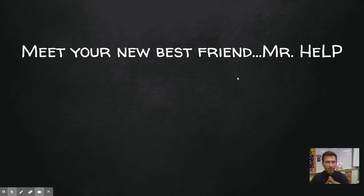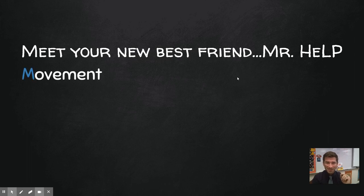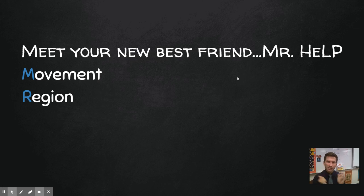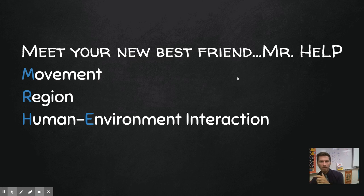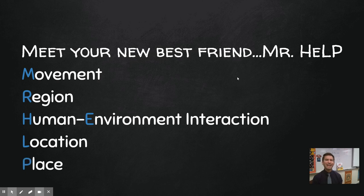Wrapping it up — how do you remember the five themes? It's your good friend Mr. HELP: Movement — people, stuff, and ideas move to and from and around the world. Region — how we compartmentalize our world based on common defining characteristics. Human-environment interaction — how humans and the environment interact with one another. Location — absolute and relative. And lastly, Place — the natural physical characteristics and the human characteristics of a place. Those are your five themes of geography.